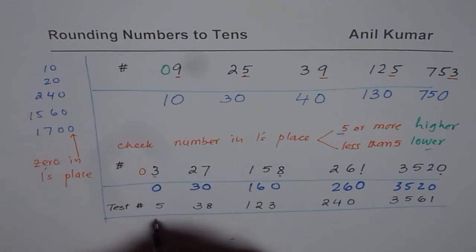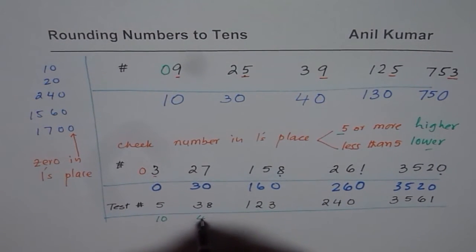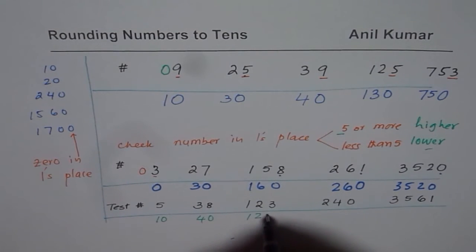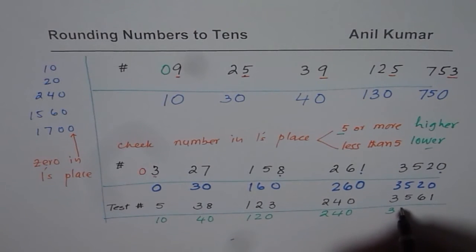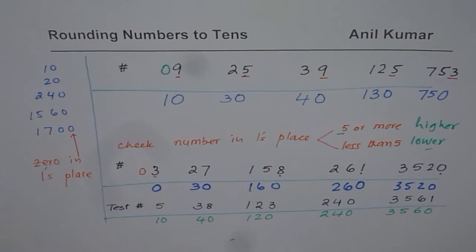Round these numbers to nearest tens and check my answer. My answers for these numbers are, for 5, you should get 10, 38, 40, 123, 120, 240 remain same, and 3,561 will be 3,560.